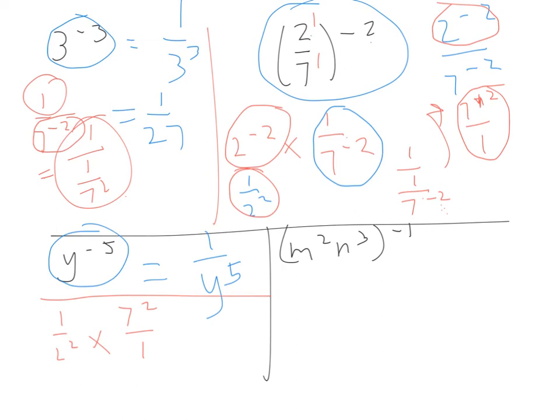So then, over here, we've now got 1 times 7 squared. So we have 49. 2 squared times 1 over 4. So that's where we end up with that one.